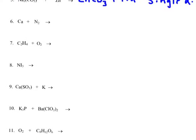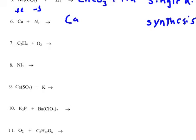I've got calcium, an element, reacting with nitrogen, an element. So I have two elements combining — that is called synthesis. Calcium is a plus 2, nitrogen is a minus 3. I put the positive one first, which is a plus 2. I put the negative one second, which is a negative 3. And we're going to swap — that's going to be a 3-to-2 ratio, which does not simplify.